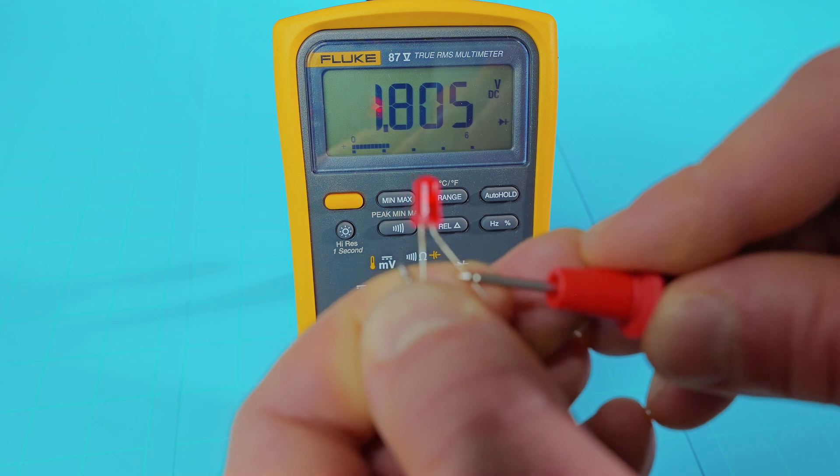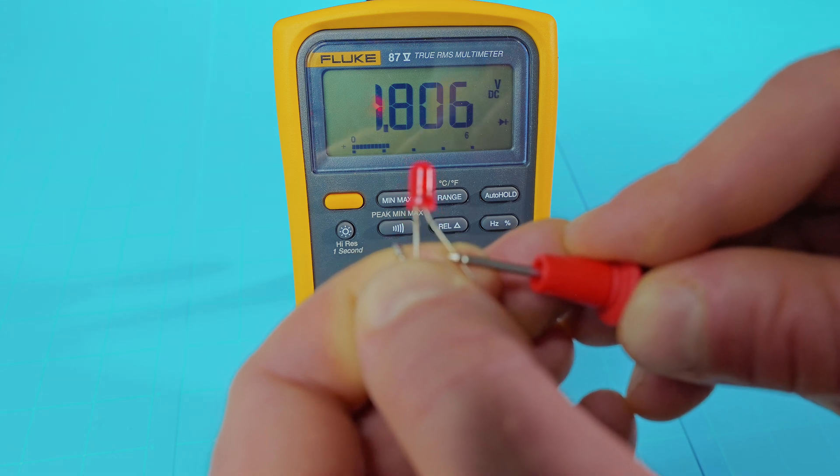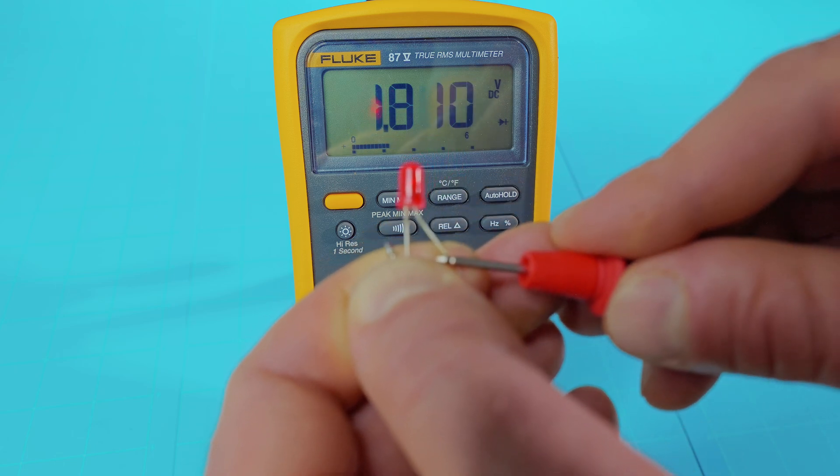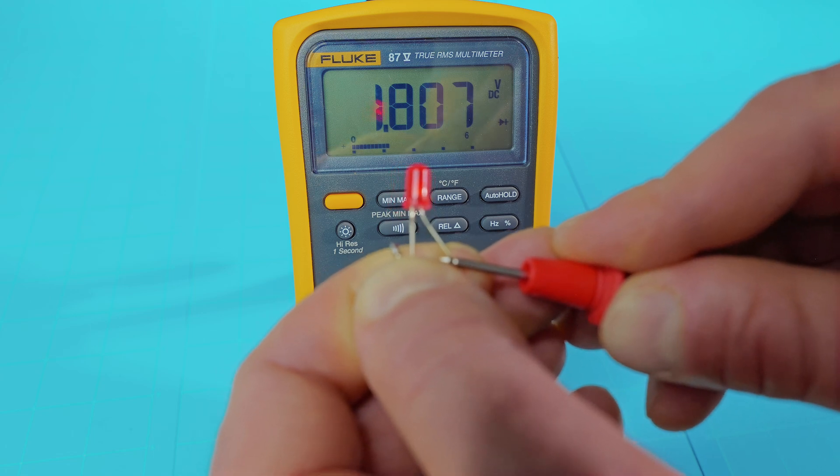You're actually getting a measurement on your multimeter as well. That's just telling you the DC that's going across the diode. That's another way you can tell if your LED is burnt out or not. If you're not getting any kind of voltage across it, it is burnt out.